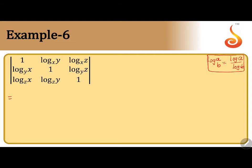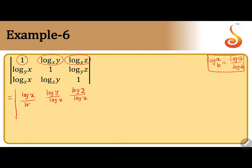Observe the first row. Moving to the second term first: log y to the base x, I can write as log y by log x. Similarly, the third element in the first row, log z to the base x, is log z by log x. In both terms the denominator is log x, so the first element 1 can be written as log x by log x.